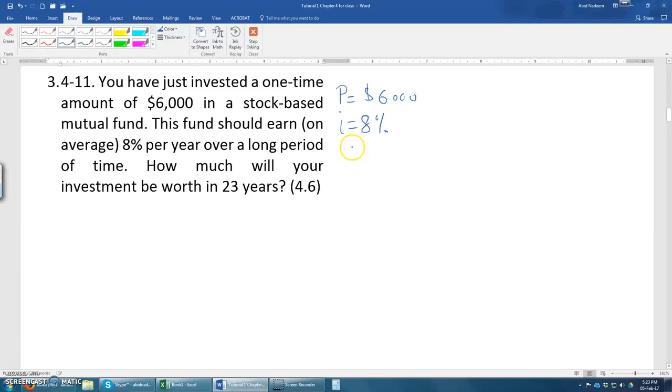Long period of time it will give an interest. So that long period of time is 23 years. So N is 23 years.